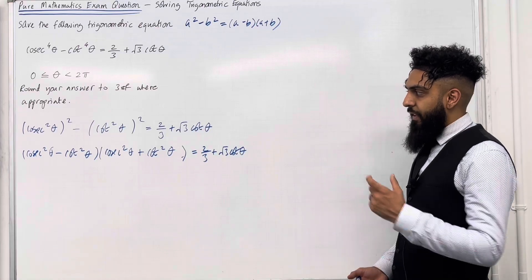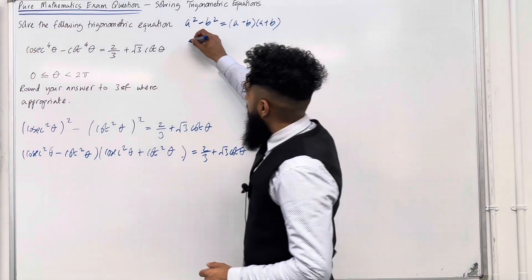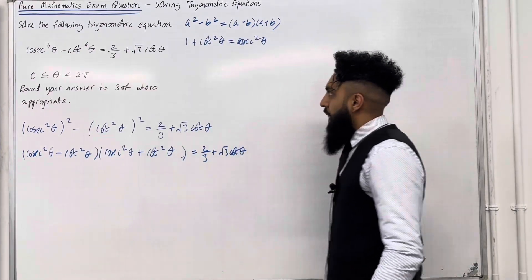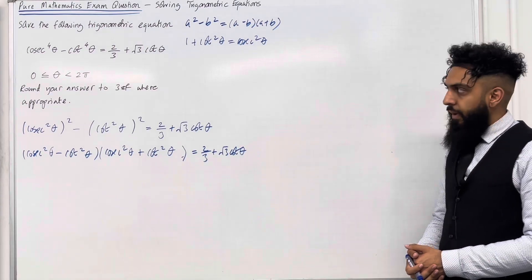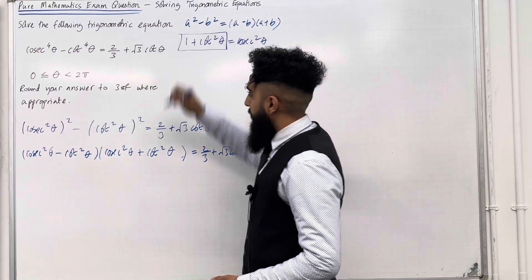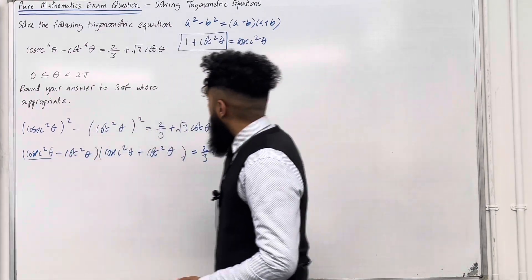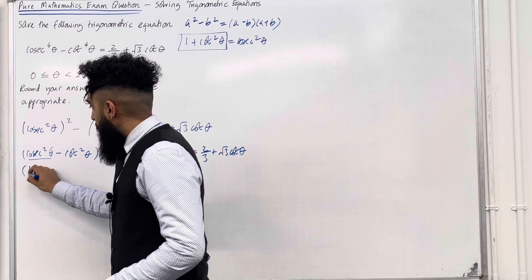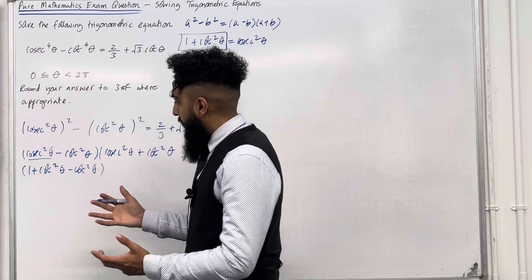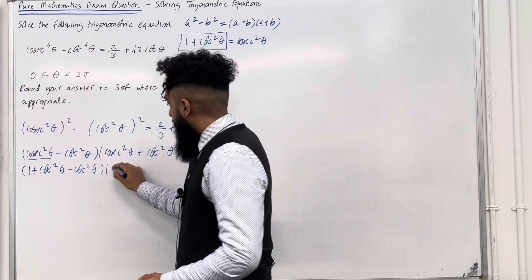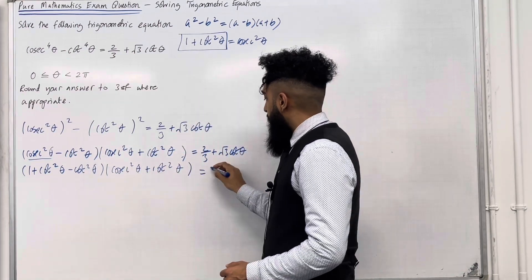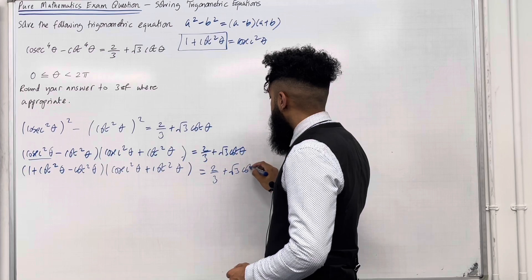Now I need to simplify the first bracket. I know that 1 plus cot squared theta equals cosec squared theta — that is one of the most important identities. Using this identity, we replace cosec squared theta with 1 plus cot squared theta in the first bracket, giving 1 plus cot squared theta minus cot squared theta. The second bracket remains cosec squared theta plus cot squared theta, equal to 2 over 3 plus square root 3 cot theta.